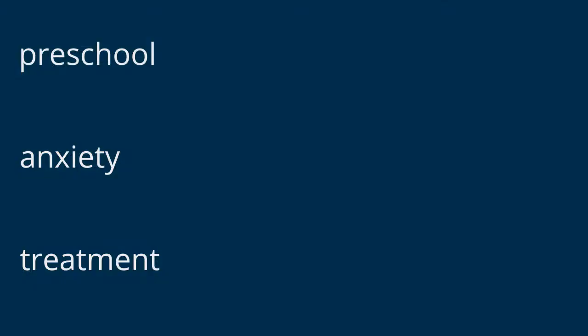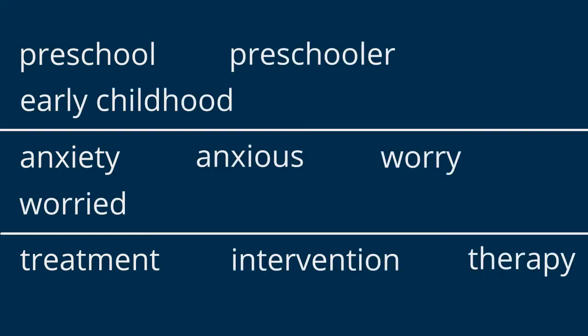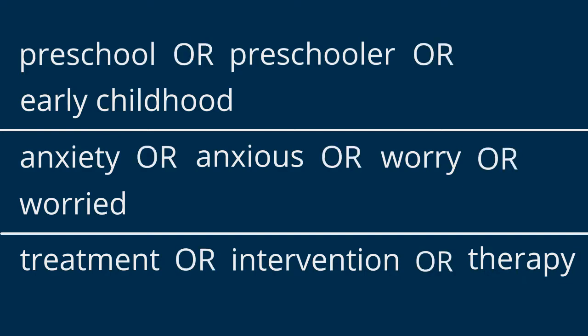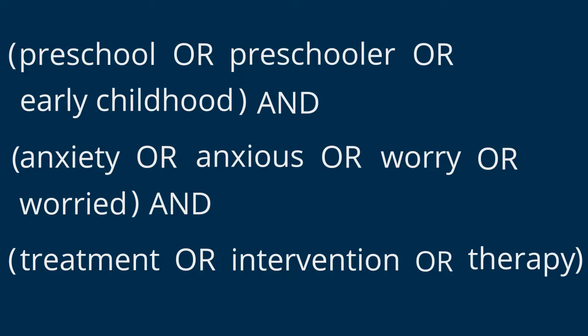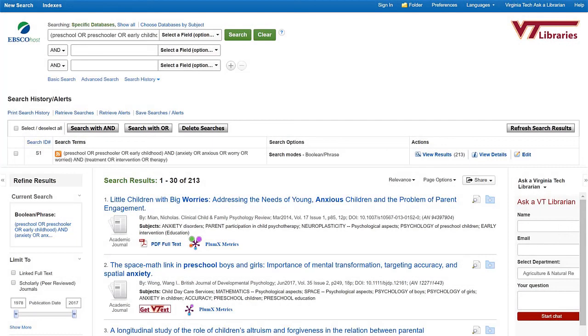Let's see what this would look like with the keywords I've brainstormed. I had three major concepts, and I brainstormed multiple synonyms for each major concept. I'm going to join the synonyms within each concept with the word OR. You don't have to use all capital letters, but they do make it easier to visually separate your search terms. To keep my concepts separate, I'll put parentheses around each one. Then between each concept, I'll add the word AND. Now I have what's called a search statement. I could put this into a database complete with the parentheses, and it would work just fine.